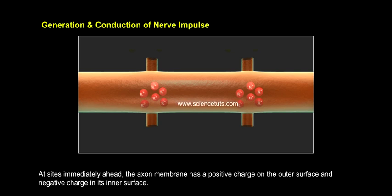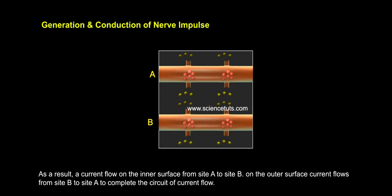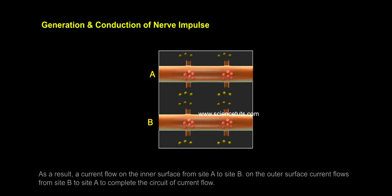At sites immediately ahead, the axon membrane has a positive charge on the outer surface and a negative charge on its inner surface. As a result, a current flows on the inner surface from site A to site B. On the outer surface, current flows from site B to site A. To complete the circuit of current flow, the polarity at site B is reversed and an action potential is generated at site B.